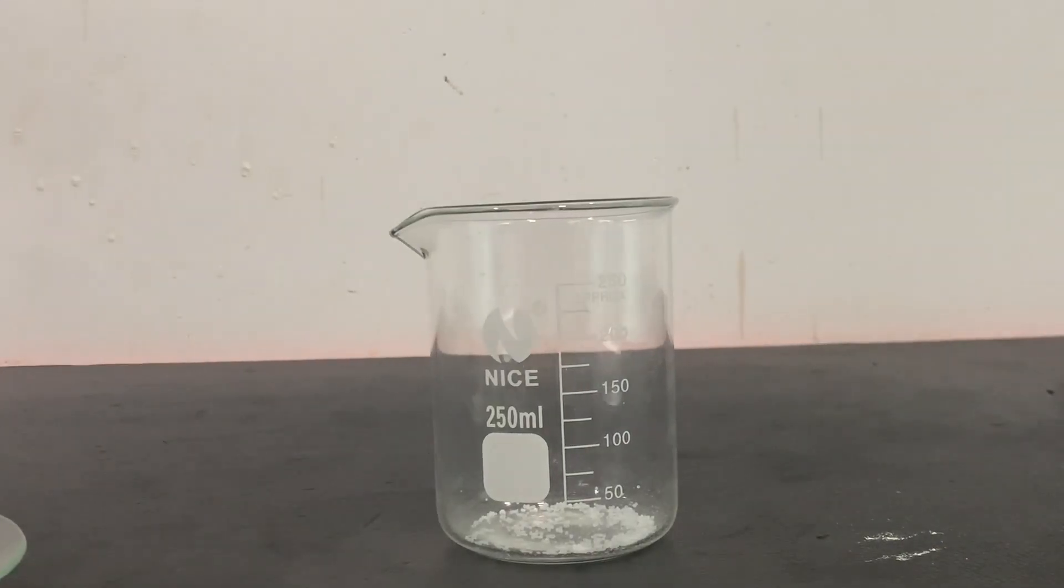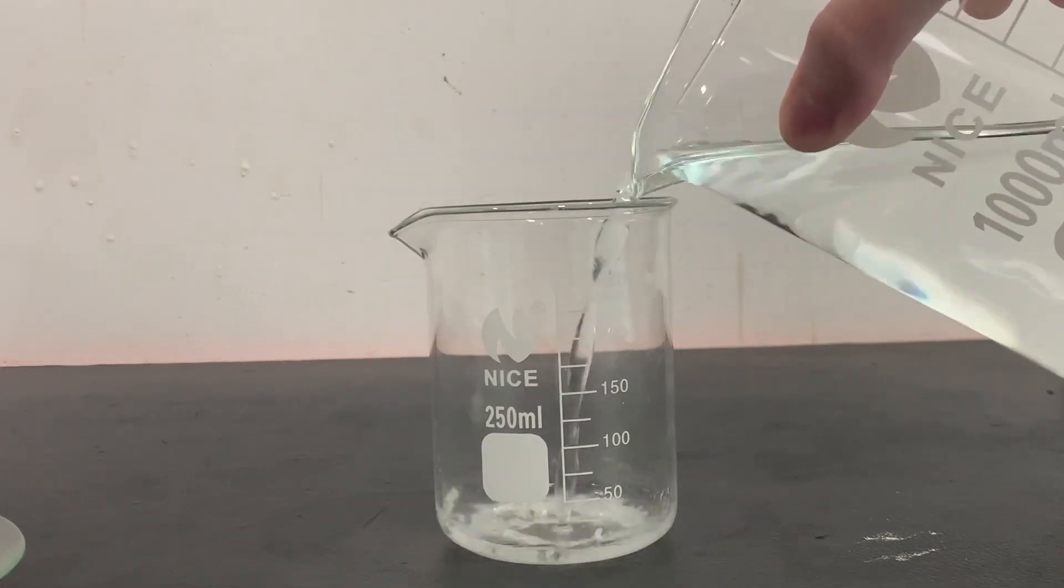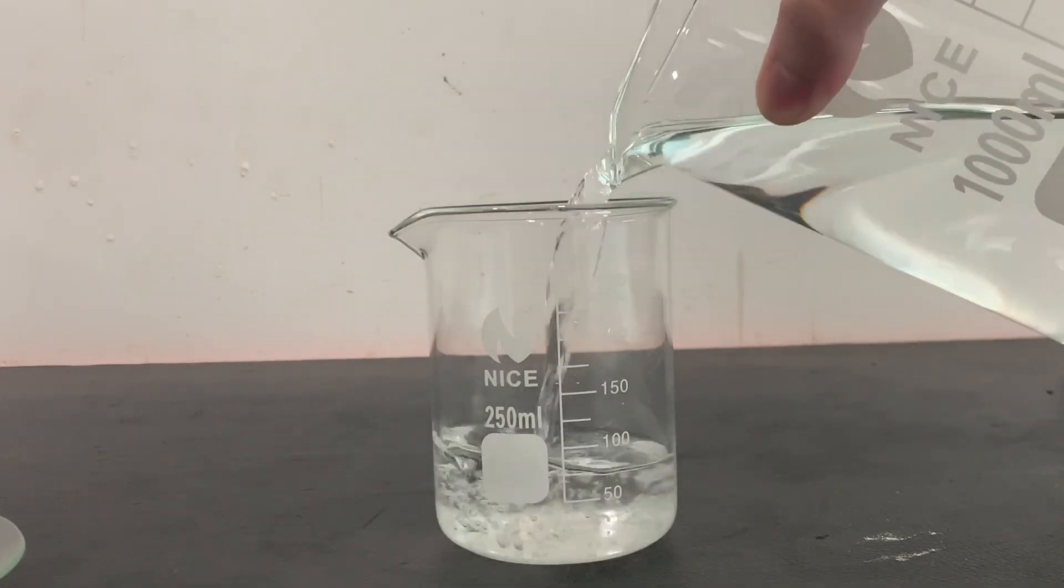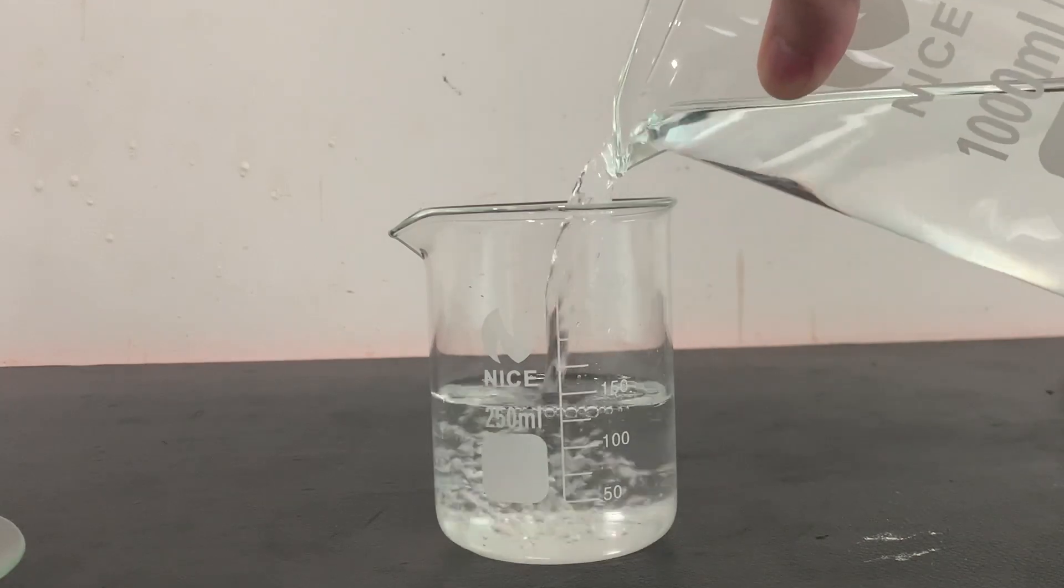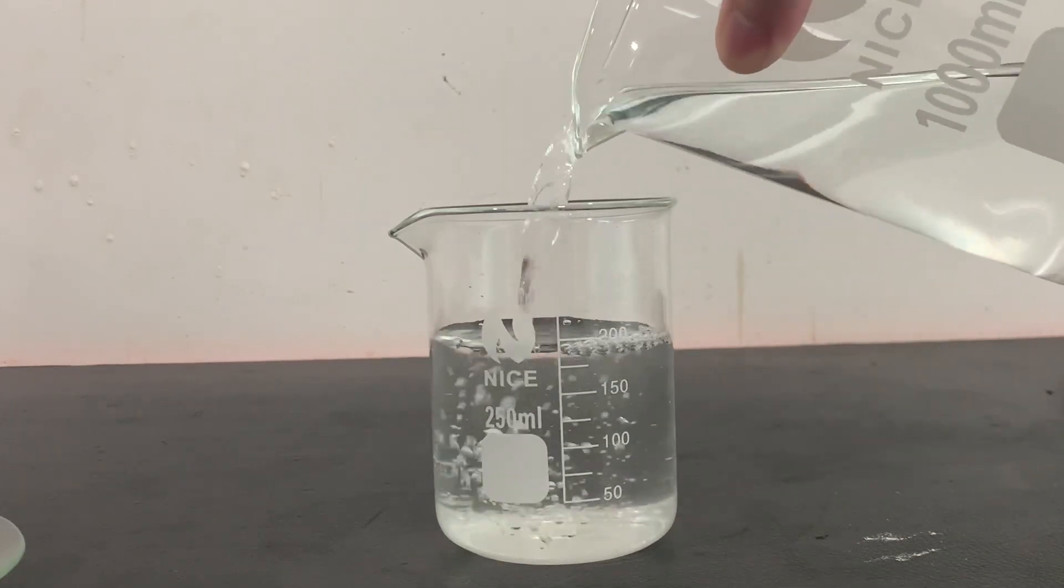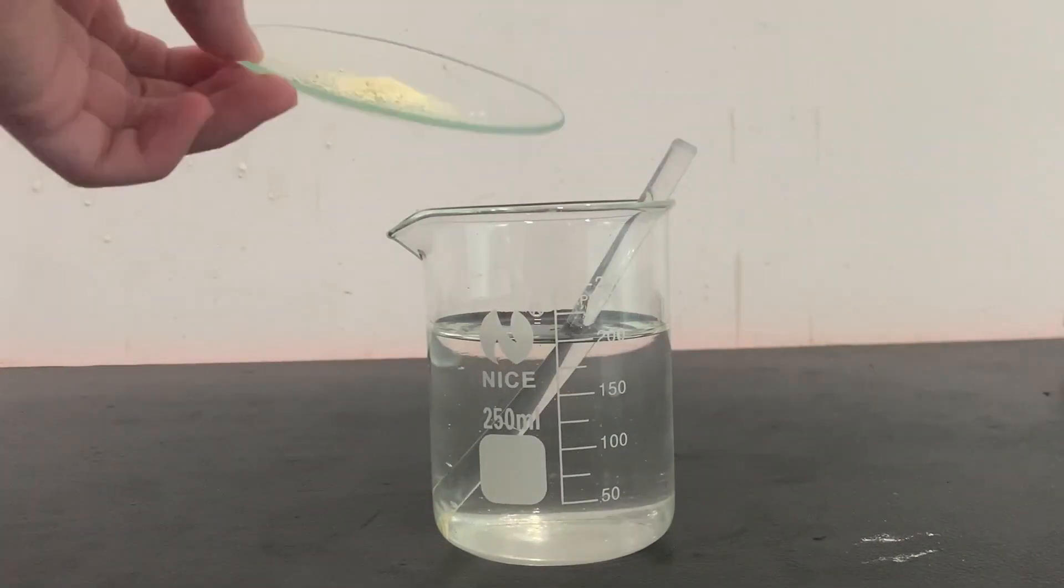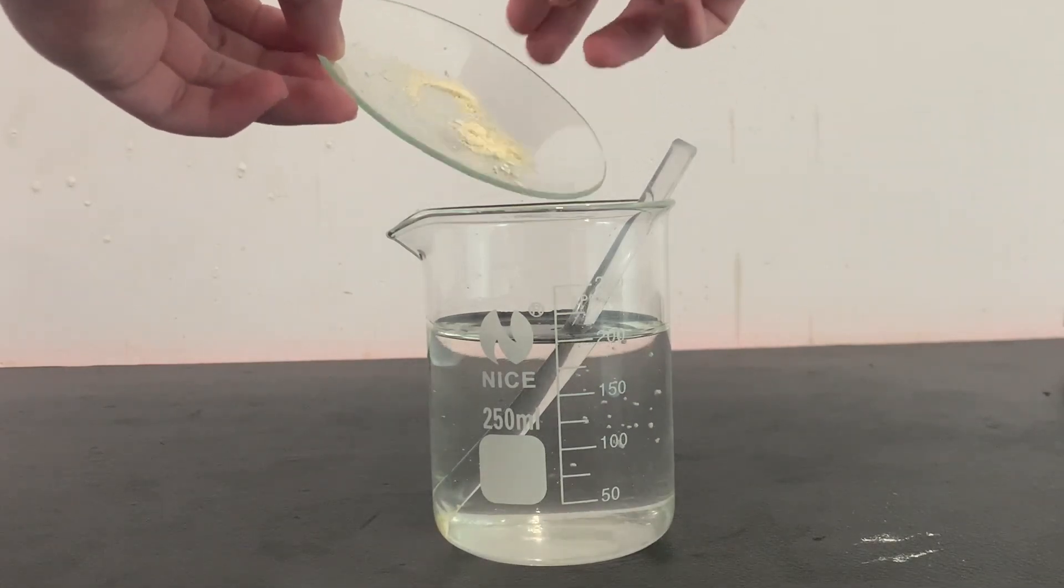To demonstrate the chemiluminescence of luminol, I firstly made the basic solution by dissolving 0.8 grams of sodium hydroxide in 200 milliliters of water. I then added all of the luminol I had made to the solution.